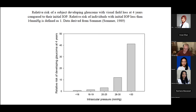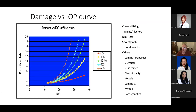This exponential relationship between pressure and risk of loss was confirmed in studies like the Early Manifest Glaucoma Treatment Trial and others. For every 1 mmHg rise in pressure, there was an increased risk of progression of about 10–11 percent, mirroring the exponential function shown by Sommer. Some patients don't all sit on the same risk curve — some have tough optic nerves with low risk even at moderately high pressures, while others have more fragile optic nerves where risk is high even at pressures in the so-called normal range.